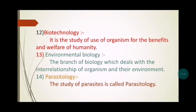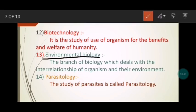The thirteenth branch is environmental biology, which deals with the interrelationship of organisms and their environment. For example, humans exhale carbon dioxide into the environment and inhale oxygen provided by the environment. This relationship between organisms and their environment is studied in environmental biology.